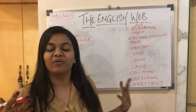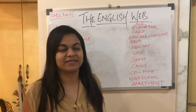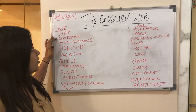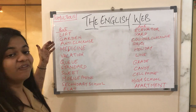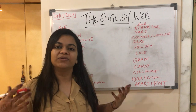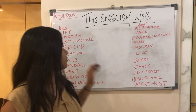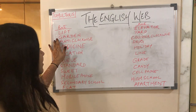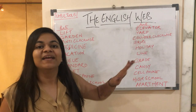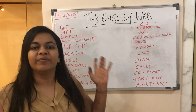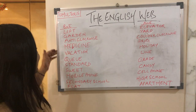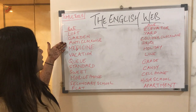The second word is 'garden.' Garden is very popularly used in India, so it's no wonder that it's British English. 'Yard' is the American English counterpart.